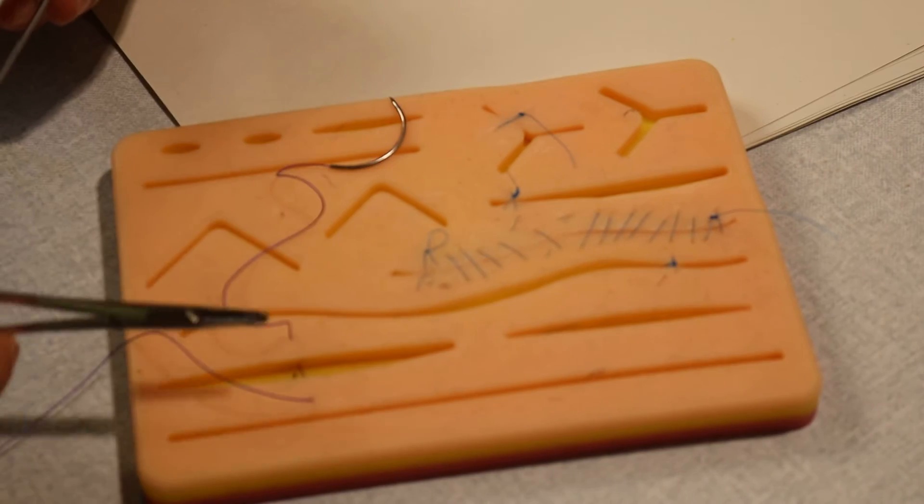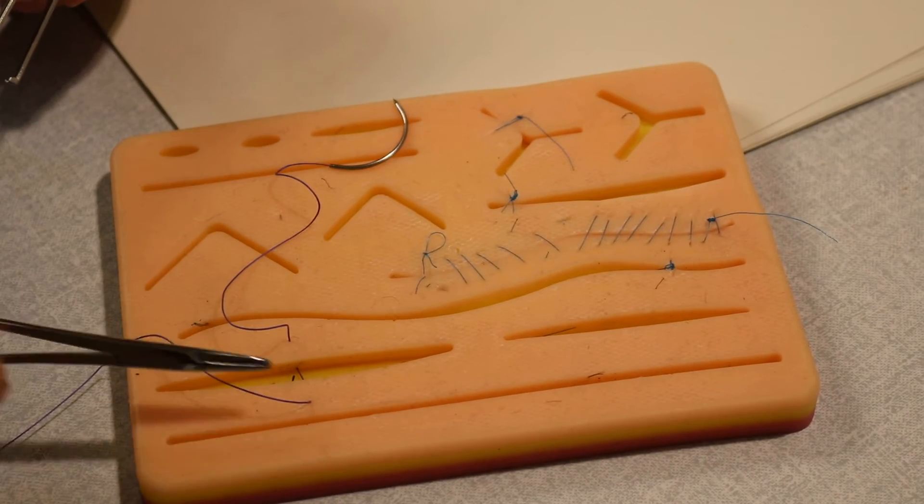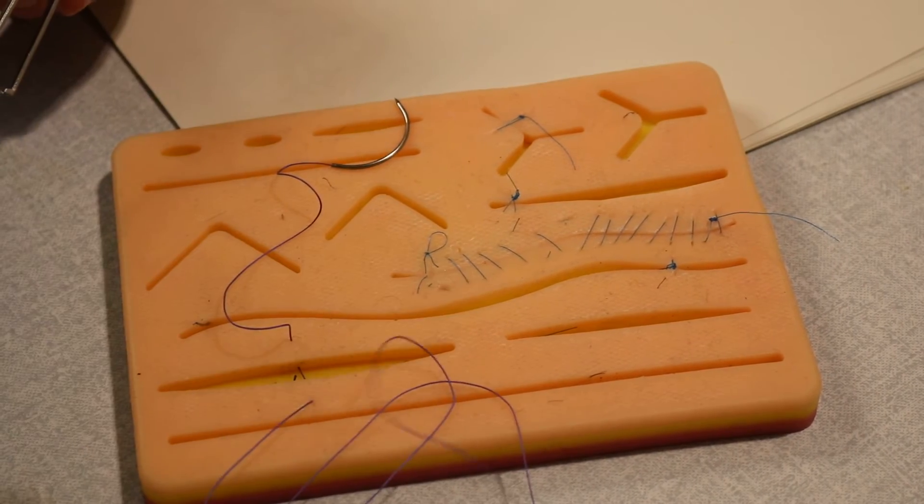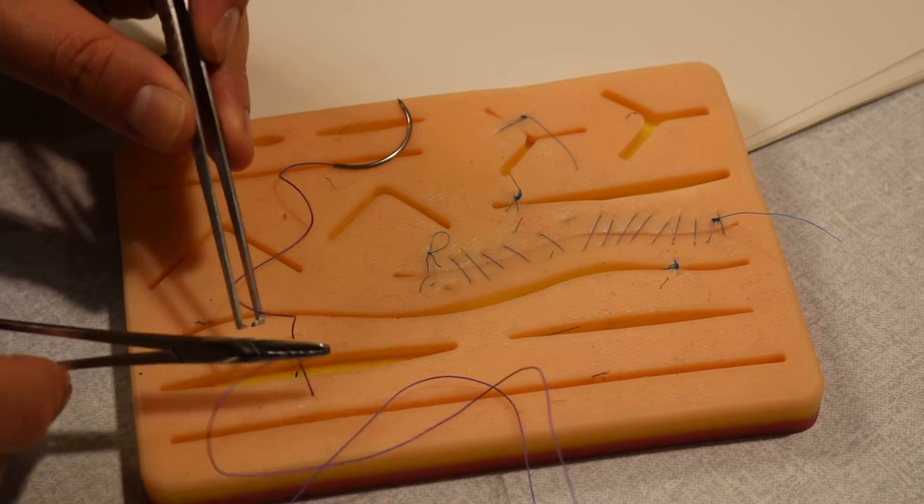So now we have a needle at one side and the rest of the thread on the other side. What we need to do is to tie this to this.